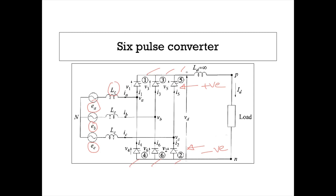LC represents the inductance of the source, or actually the inductance of the secondary winding of the transformer. The current in SCR1 is represented by I1; I3 represents current in SCR3; I5 represents current in SCR5. Similarly, I4, I6, and I2. IA, IB, and IC represent instantaneous values of current in phase A, phase B, and phase C. ID represents the direct current in the load, and this current is assumed to be ripple-free because of the smoothing reactor LD on the output side.